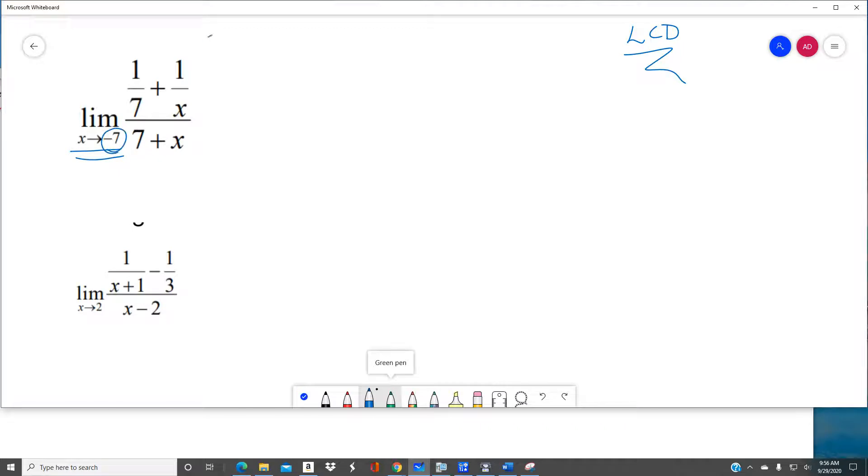So when I take negative 7 and plug it in, I get 0 in the numerator, I get 0 in the denominator. What the heck? Yep, indeterminate form. So what I'm going to do is multiply through by the least common denominator.